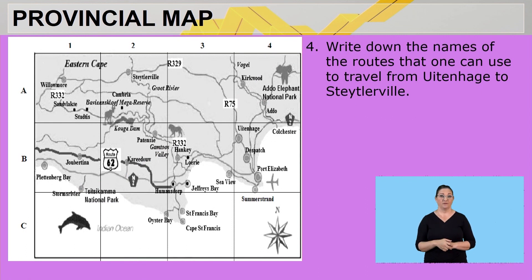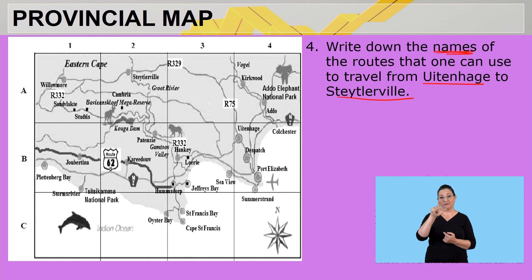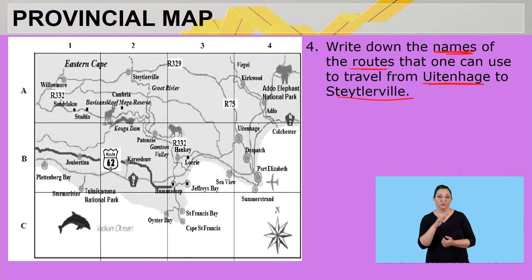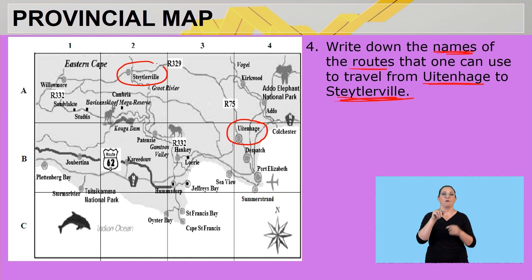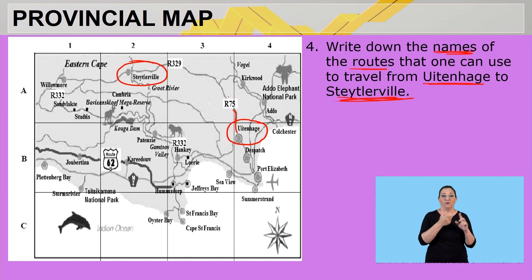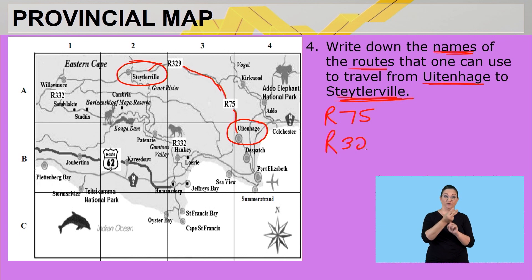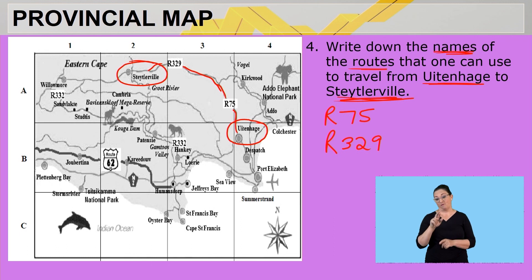Question four says: write down the names of the routes that one can use to travel from Uitenhage to Steytlerville. Finding both towns on the map — here is Uitenhage and here is Steytlerville. The routes to use are: from Uitenhage, travel on the R75, then connect with the R329 to reach Steytlerville. So the answer is the R75 and the R329.